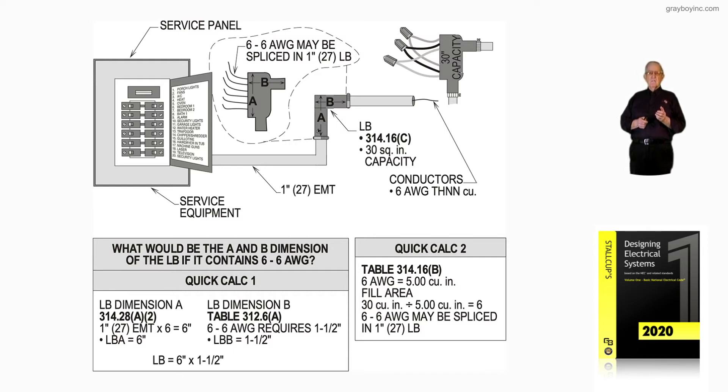So yes, six number six AWGs may be spliced in the one inch LB as long as the LB was listed to do so.